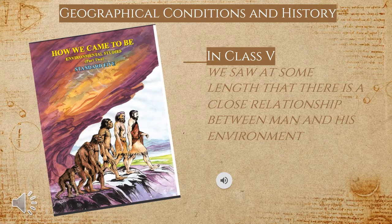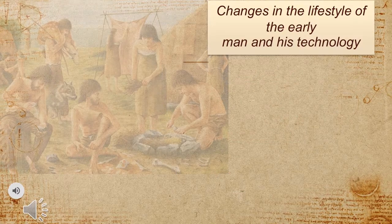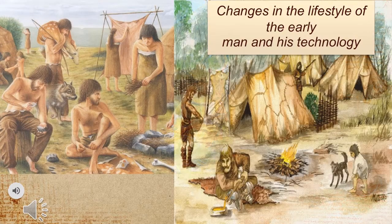Do you remember what we learnt in Class 5? We saw at some length that there is a close relationship between man and his environment. We saw how the changes in the lifestyle of the early man and his technology were related to the changes in the surroundings. We also reviewed the history of human civilization from the Stone Age to the agricultural civilization that flourished on the banks of the rivers.